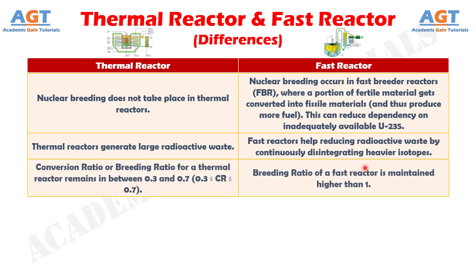Difference number 7. Conversion ratio or breeding ratio for a thermal reactor remains between 0.3 and 0.7. Whereas, the breeding ratio of a fast reactor is maintained higher than 1.